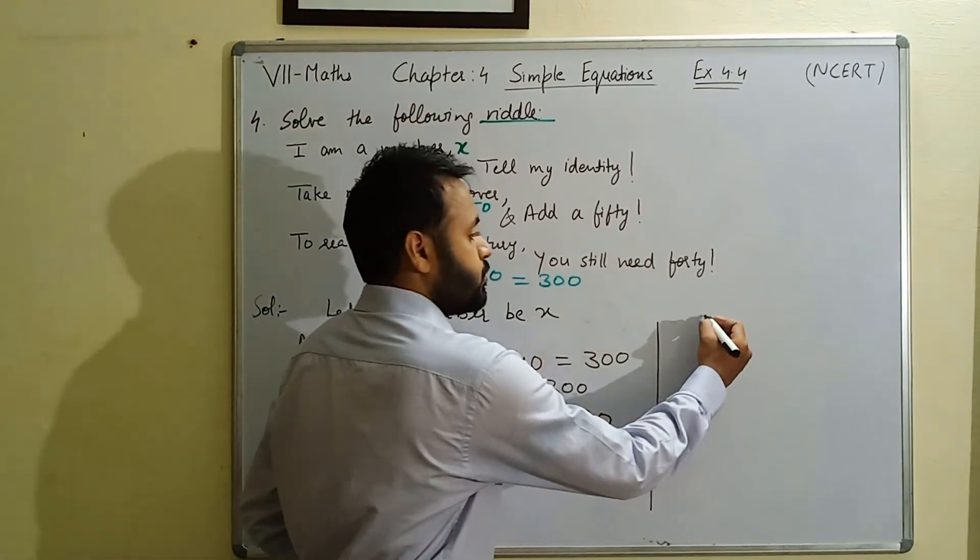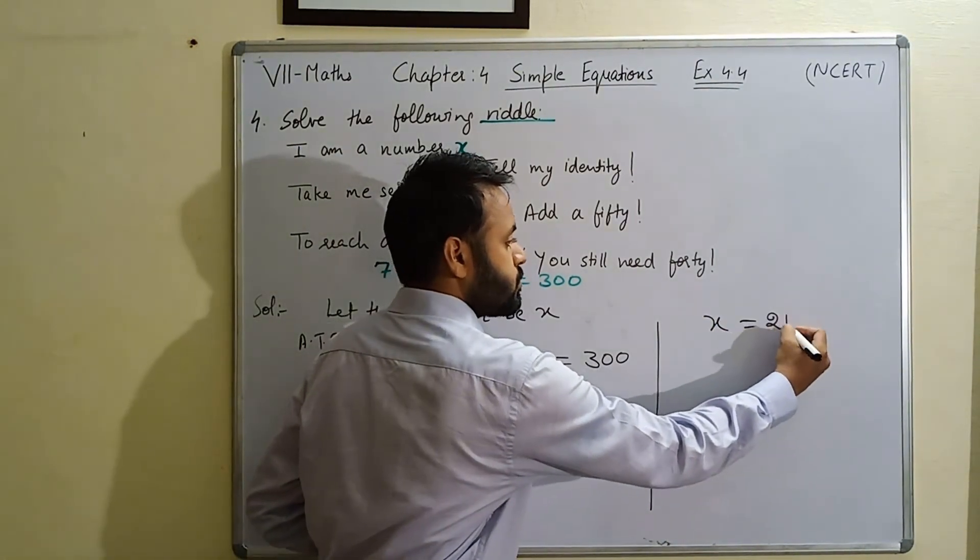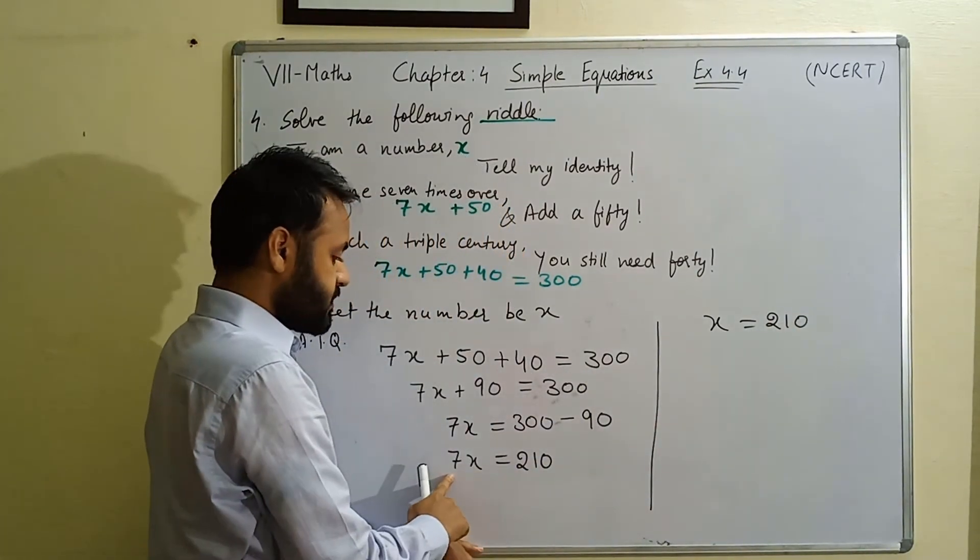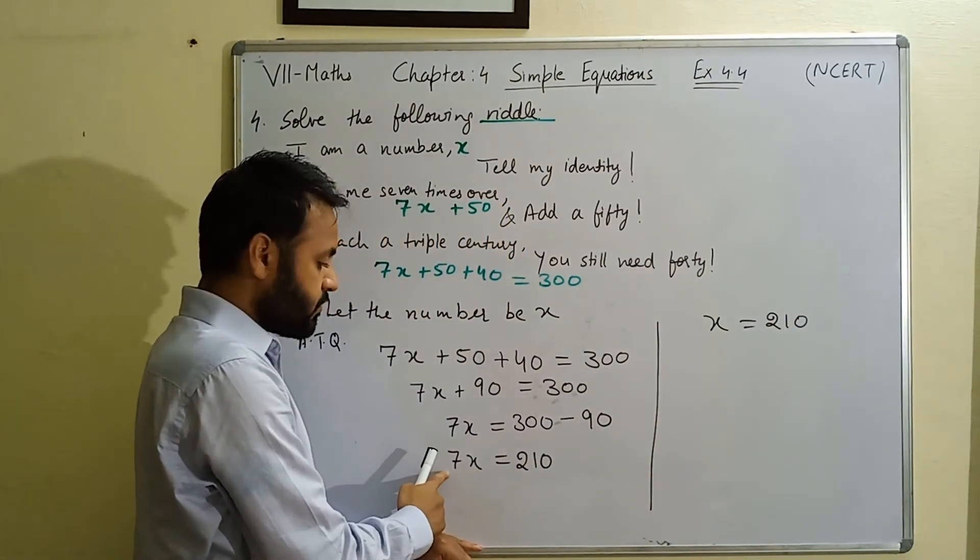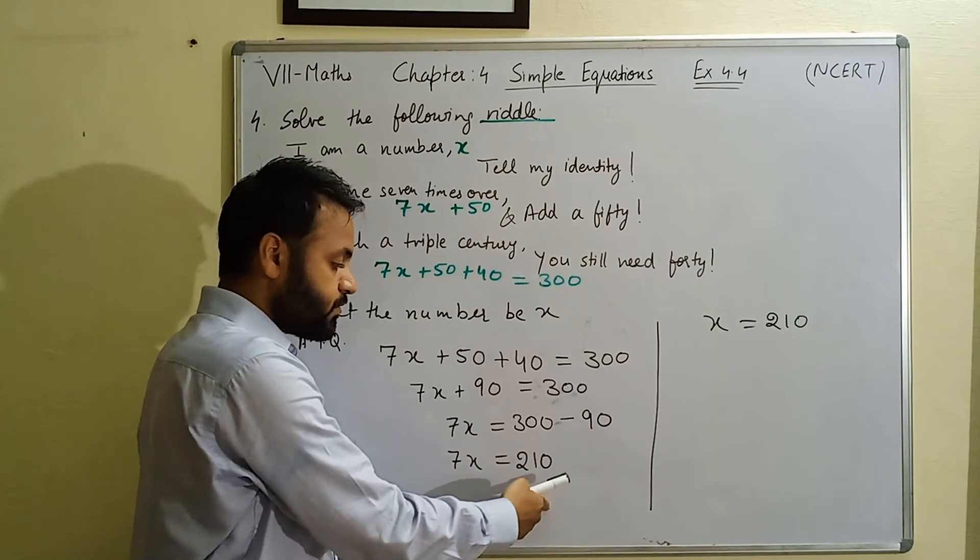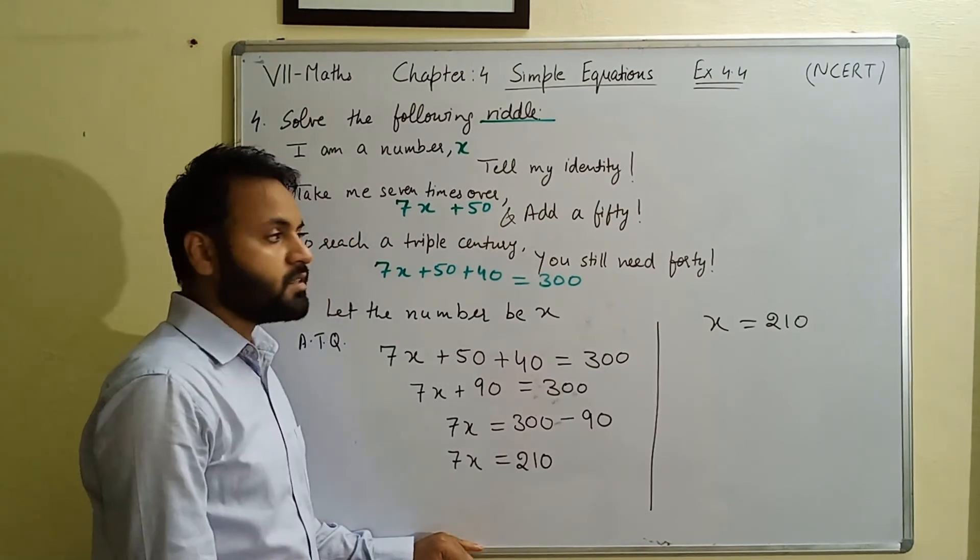So 7 ko jab shift karenge to the right hand side. So 7 - yeha pe 7 or x multiply ho raha. So 7 is multiplied to x here. When we shift this 7 to right hand side, it will be dividing this 210.